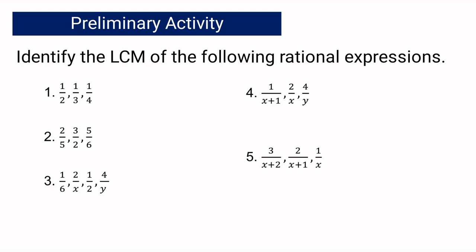For our preliminary activities, we are going to find the LCM or the LCD of the following rational expressions. If you have one-half, one-third, and one-fourth, what is our LCD? Correct, the LCD is 12. For the rational expressions 2 over 5, 3 over 2, and 5 over 6, our LCD is 30.